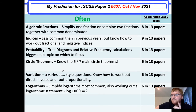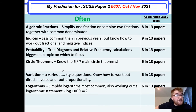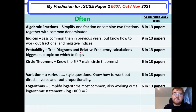Probability was a little bit of a surprise compared to my predictions — it came up more on paper two than paper four. The two main kinds of questions you'll see are either tree diagram questions, which could be conditional, or relative frequency. If you do not know the phrase 'relative frequency,' you need to review that before your October/November exam.